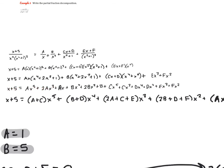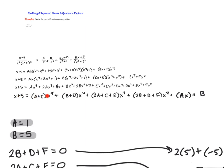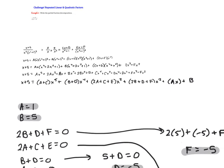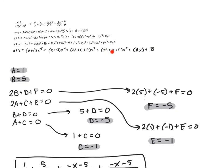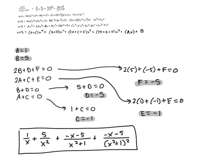Once you've multiplied out completely and grouped terms by degree — x to the fifth, x to the fourth, x cubed, and so on — you can set up your equations. We know a equals 1 from the x coefficients, and b equals 5 from the constant. All other coefficients equal 0, giving us: 2b plus d plus f equals 0, 2a plus c plus e equals 0, b plus d equals 0, and a plus c equals 0. Start from the bottom: knowing a gives you c, knowing b gives you d, and so on to solve for e and f. This is definitely a more challenging and lengthier problem, but it should be something you can do given enough time.